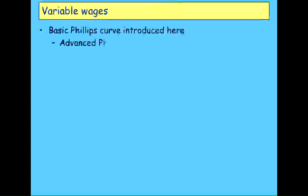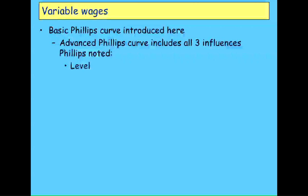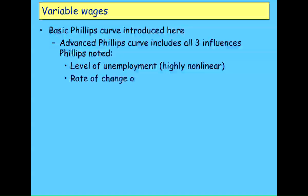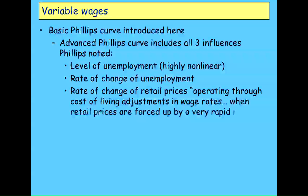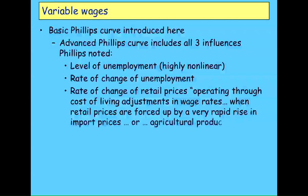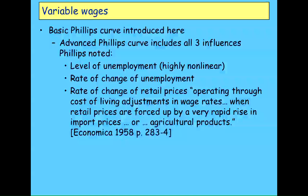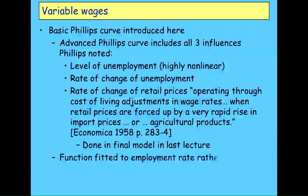The basic Phillips government model I'm going to use leaves out two of the factors that Phillips spoke about. As he said, it isn't just the level of unemployment that determines the rate of change of money wages, it's also the rate of change of unemployment and the impact of cost of living surges caused by import restrictions or weather. He's got all the factors that people think they introduced later originally in Phillips to begin with.